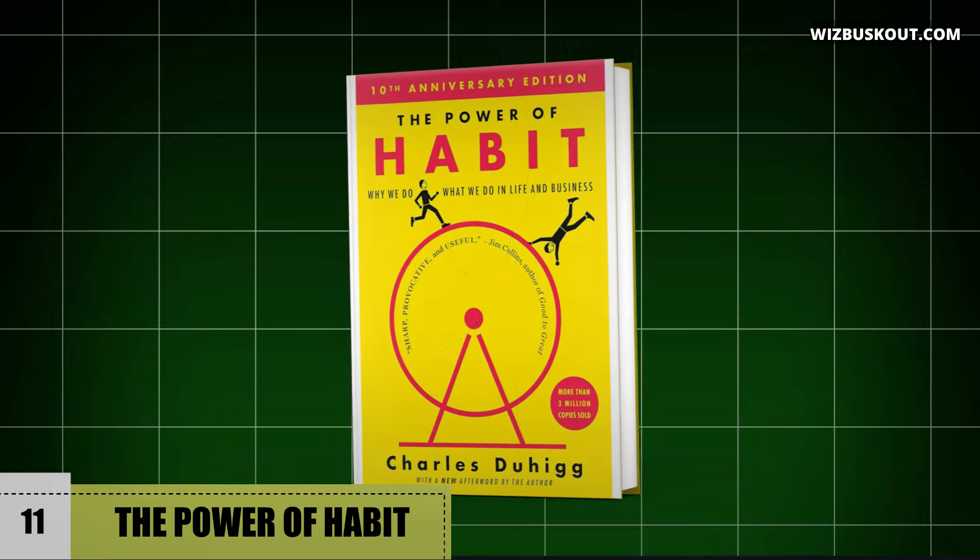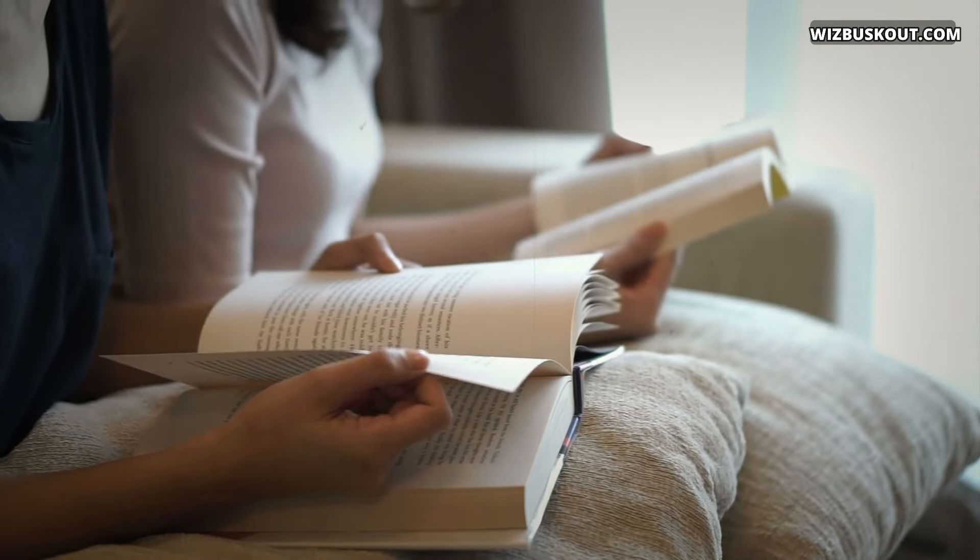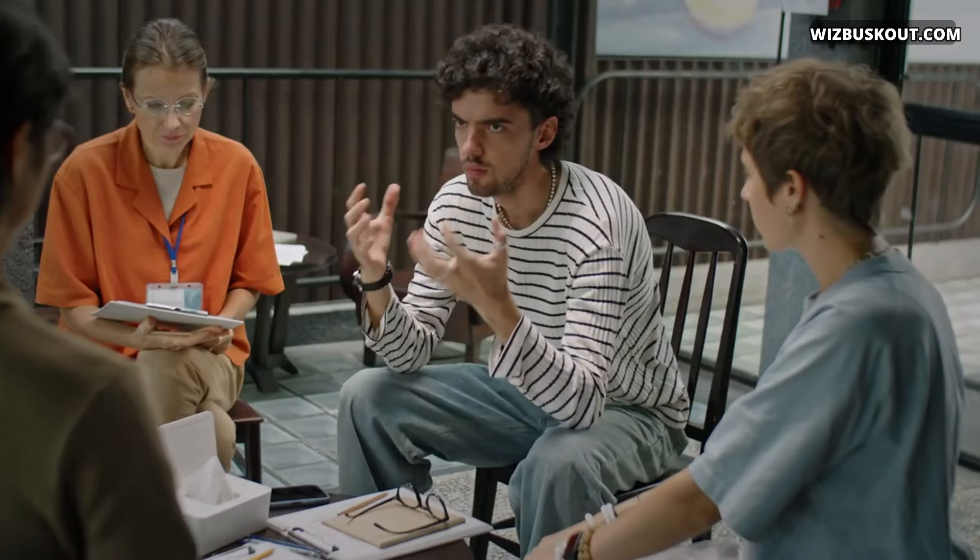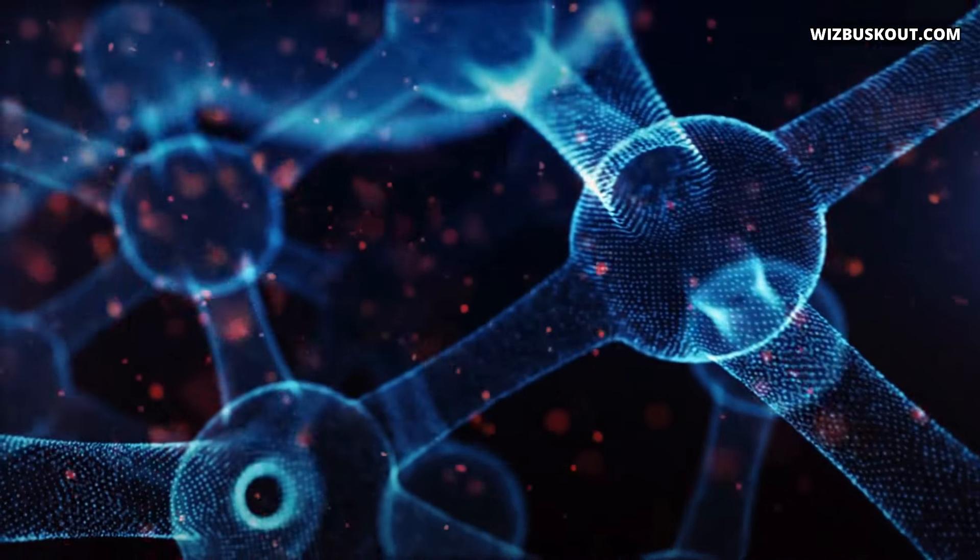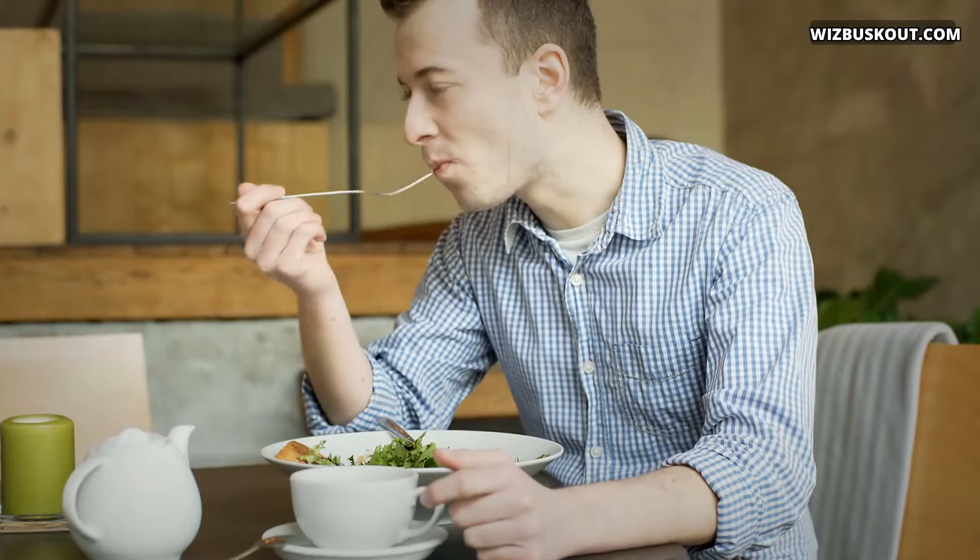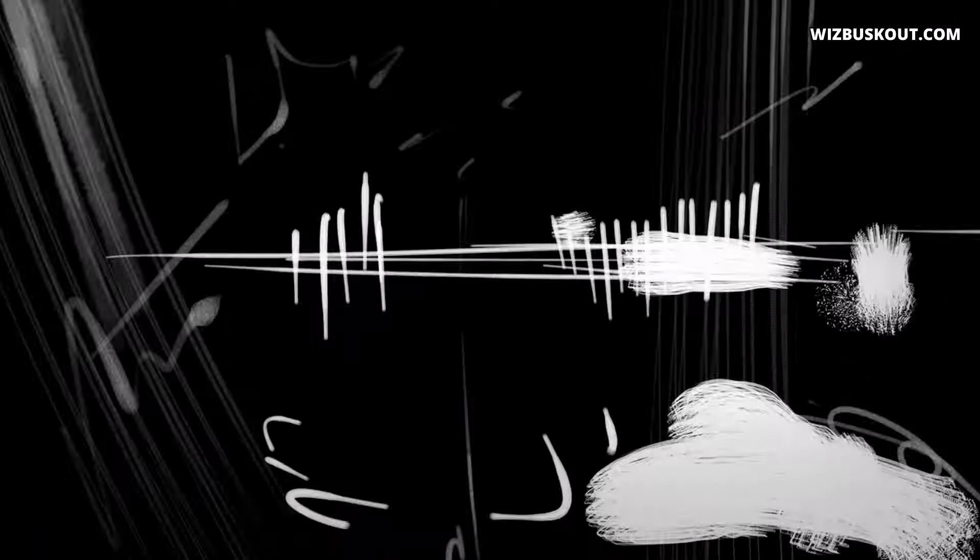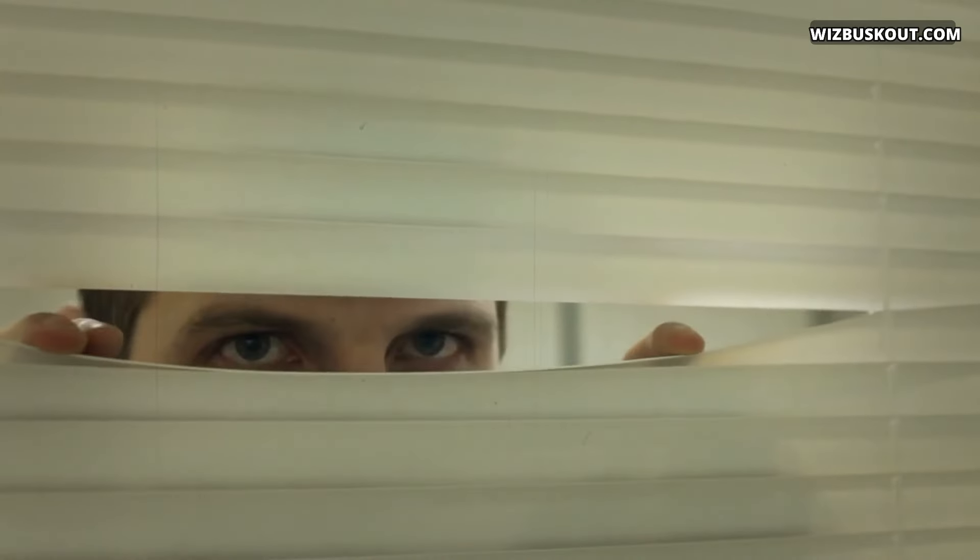Number 11, The Power of Habit by Charles Duhigg. It's like the cousin of Atomic Habits, equally insightful and maybe even more mind-blowing. First off, it's packed with fascinating stories and examples that make understanding habits a breeze. Duhigg takes you on a journey through the science behind why we do what we do, from the everyday routines to the life-changing transformations. But what sets this book apart is its focus on the power of habit loops and how they shape not just individual behavior but entire organizations and societies. It's like peeking behind the curtain to see the inner workings of human behavior.